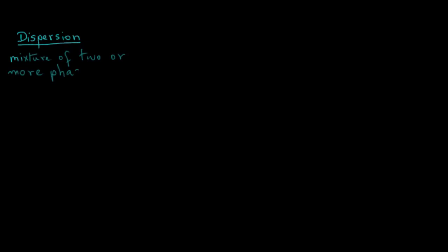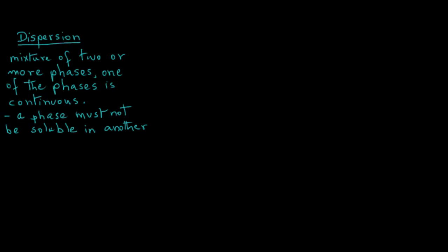Dispersion is a mixture of two or more phases. One of those phases is continuous. For example, you can have sand and water, where water will be the continuous phase. In a dispersion, it is important that a phase must not be soluble in another phase. In other words, sedimentation does not work with solutions.